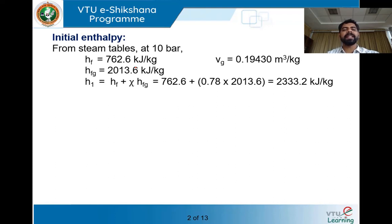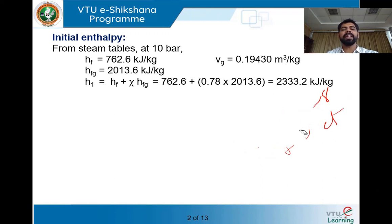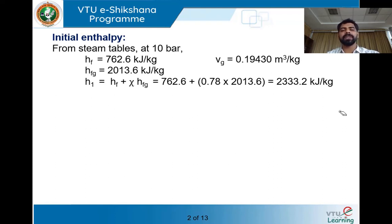Let us find the initial enthalpy H1. Since the dryness fraction x is given, the initial condition of the steam is wet steam — x = 0.78 means it is still in the wet state. Enthalpy of wet steam is given by H1 = Hf + x·Hfg. Substituting the values, the enthalpy of wet steam works out to be 2333.2 kJ/kg. So initially it is a wet steam with an enthalpy of 2333.2 kJ/kg.